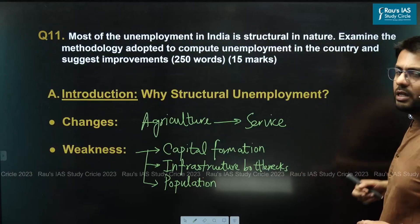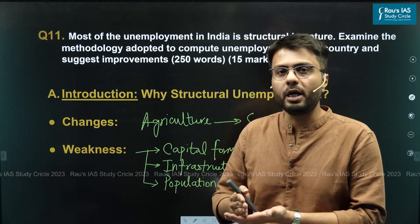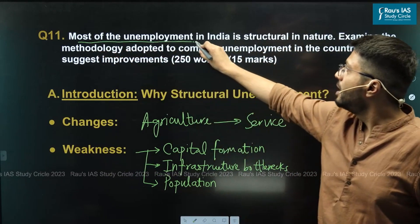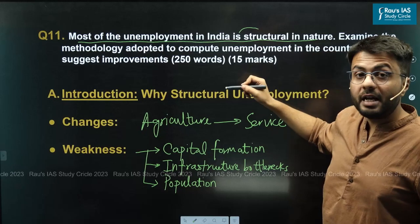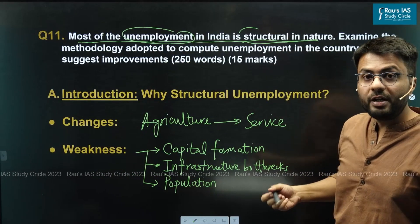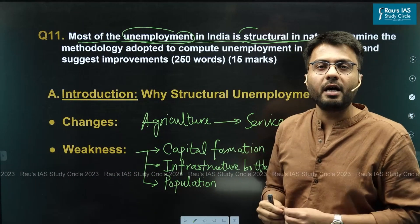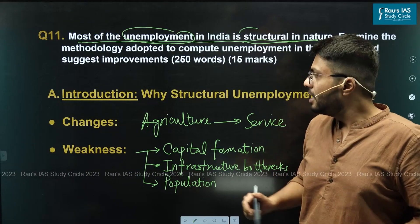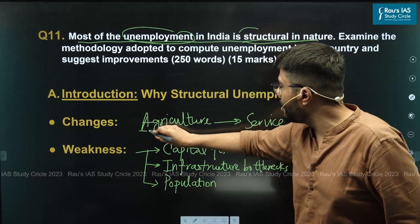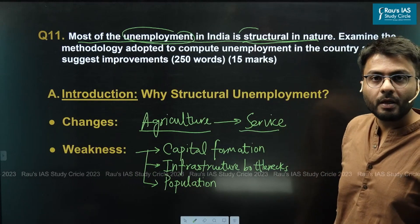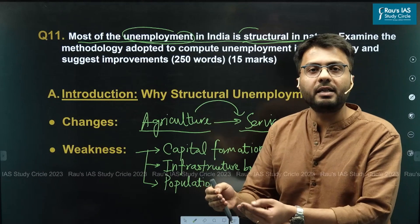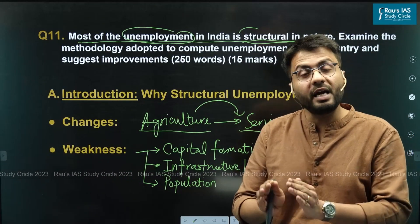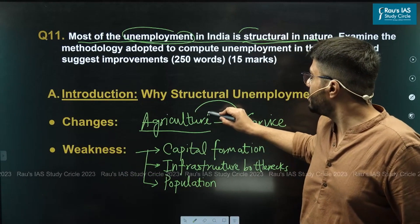Let us understand this question in a straightforward three-body format: introduction, body, and conclusion. For the introduction, we address the first statement — that unemployment in India is structural in nature. The Indian economy has transitioned directly from an agricultural-based economy to a service-oriented economy, bypassing the manufacturing sector. Since manufacturing plays a key role in absorbing the agricultural workforce into gainful employment, this transition has led to structural unemployment.